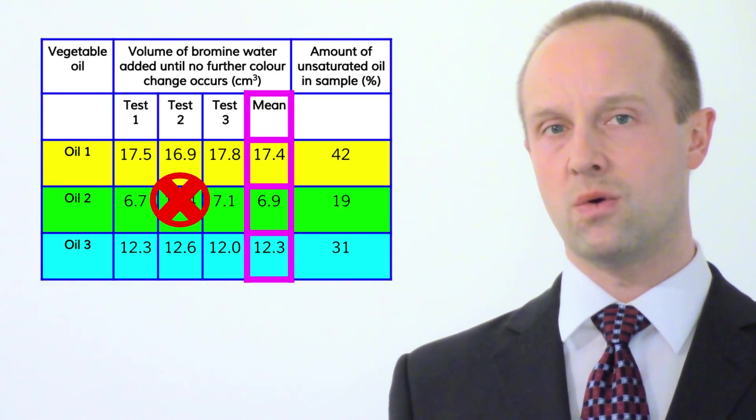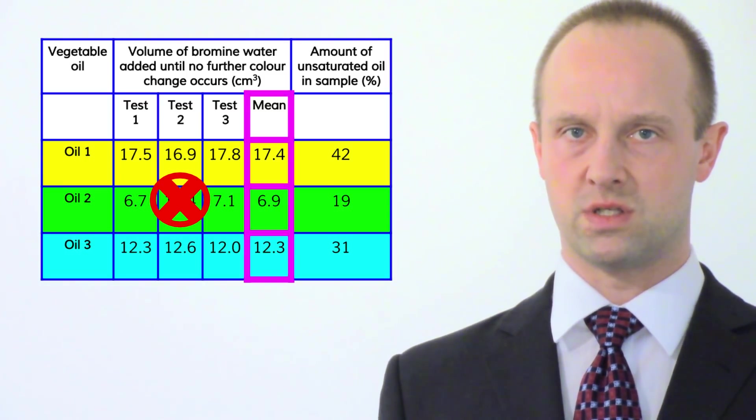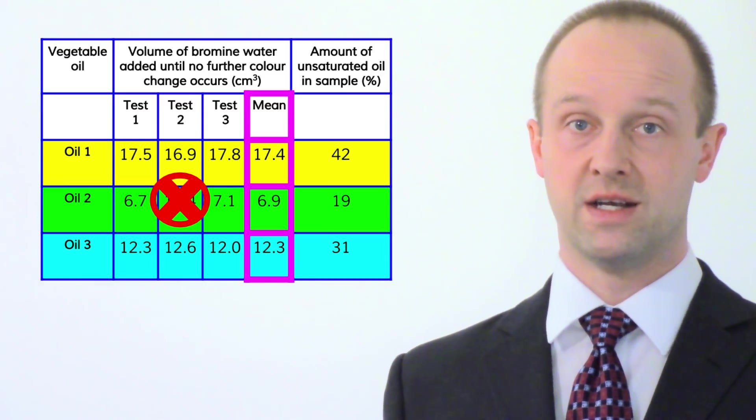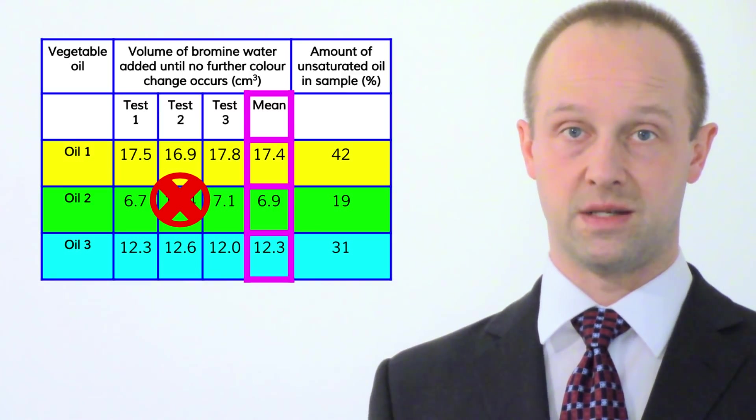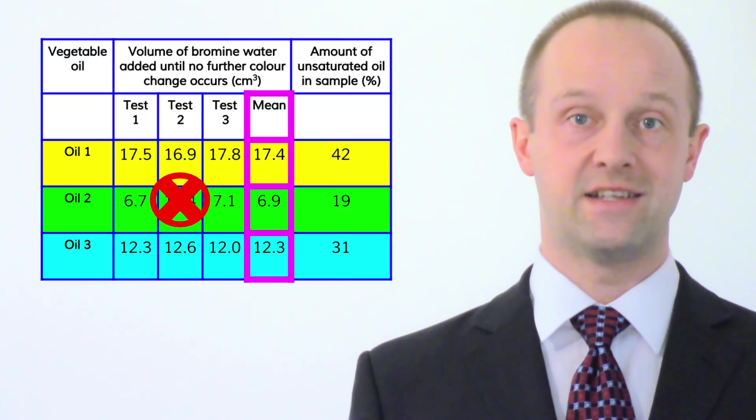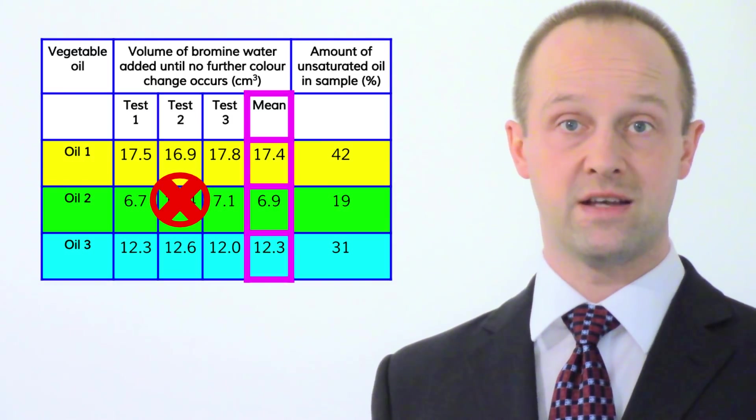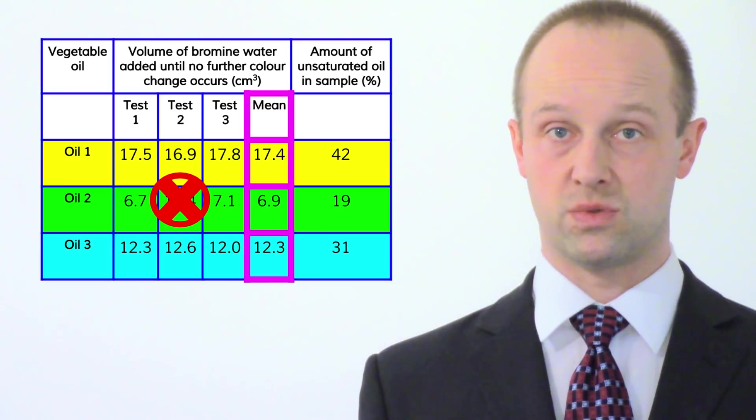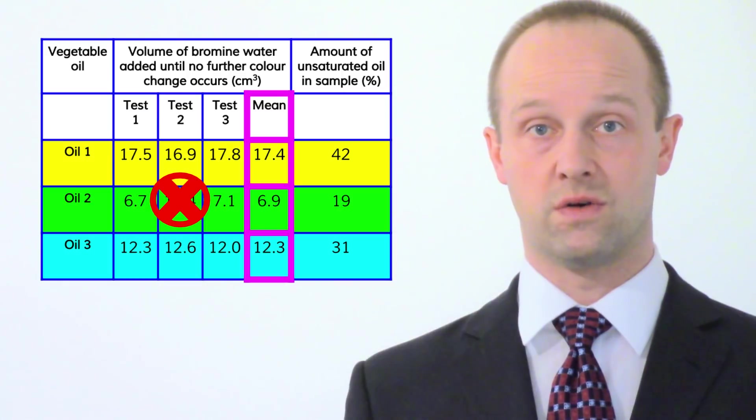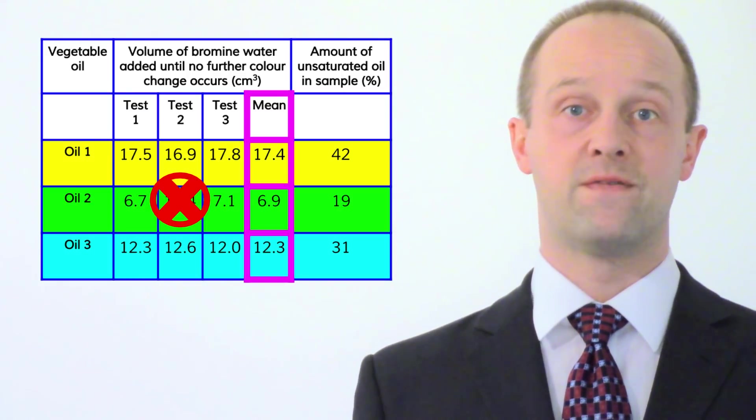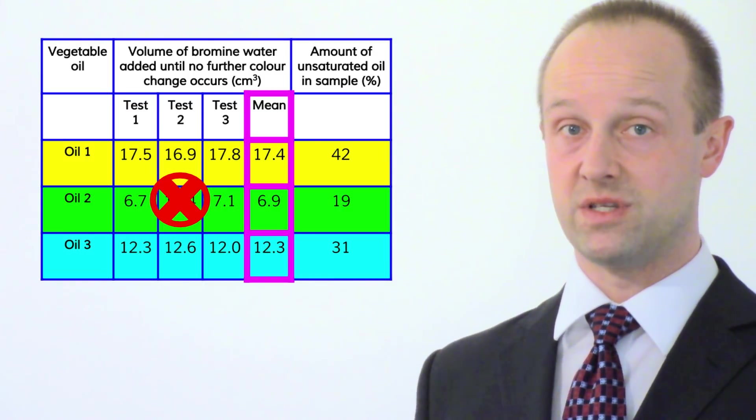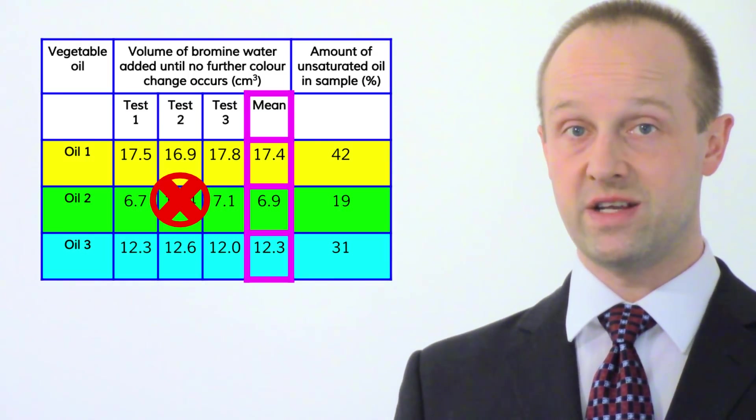If we just did two tests there'd be no way to know which one was the anomalous result. So you need to have done three tests in order to figure out which ones seem to be right and which one seems to be wrong. Now why might that anomalous result have occurred? They do quite like asking you about this as well. And really there are two key reasons why you might have got some sort of anomalous result in there.